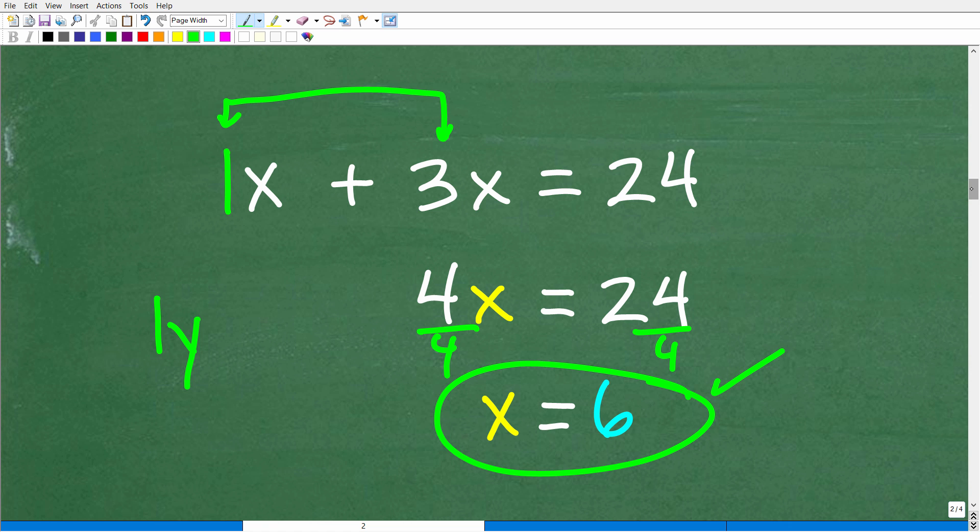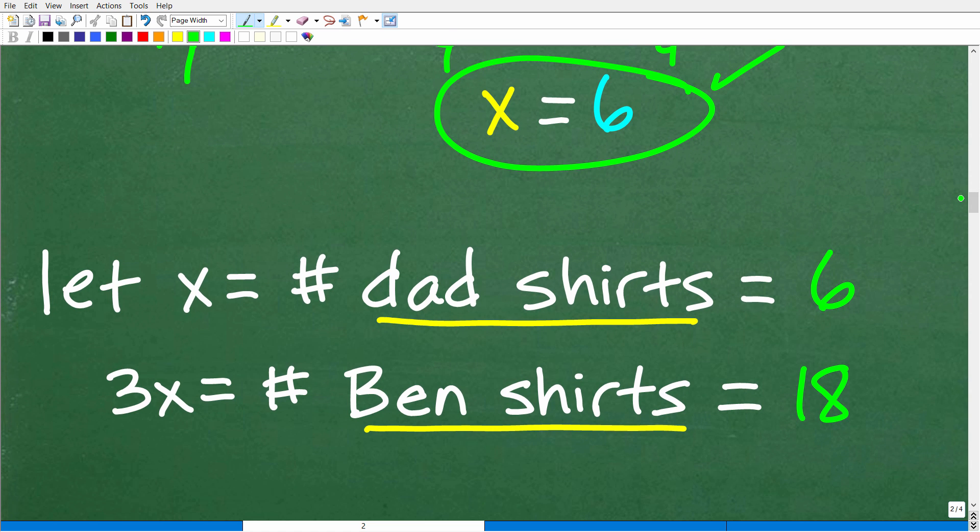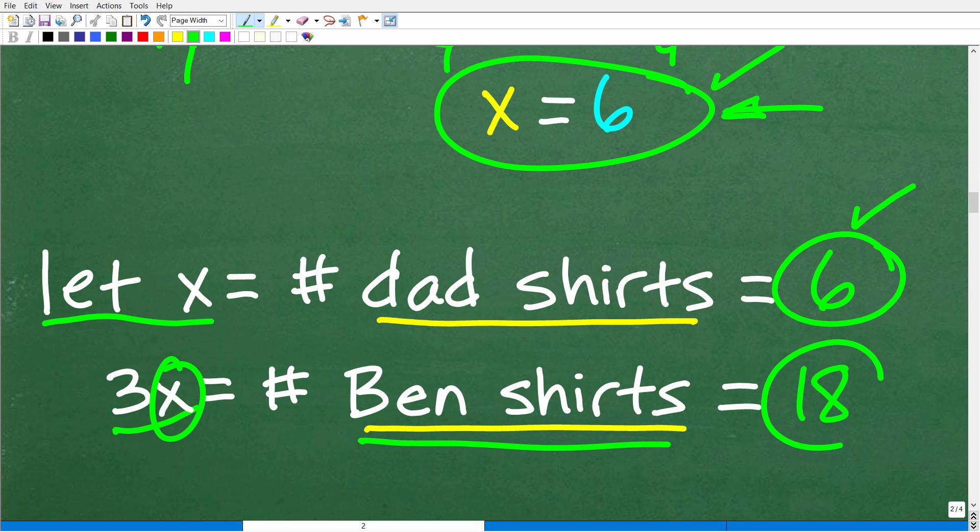Okay, so X is equal to 6. But what does that mean? Well we have to go back to our model here. Remember we said we're going to let X equals the number of dad's shirts. So we can't fail to answer the question. Just because we solved the equation, we now need to answer the question. So X is equal to 6. Again, X was the number of shirts the dad has. So that's 6 and 3X, now that we know that X is 6, so 3 times 6 is the number of shirts Ben has, which of course is 18. And 6 plus 18 is 24. This all makes sense.